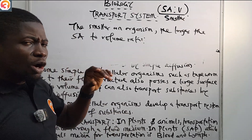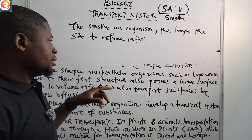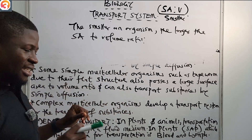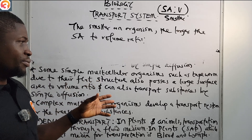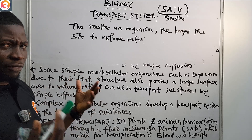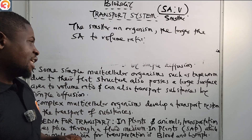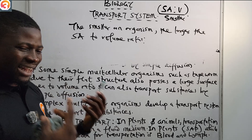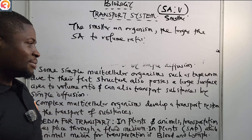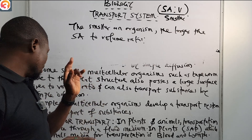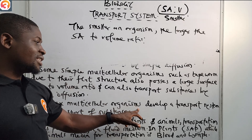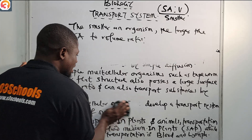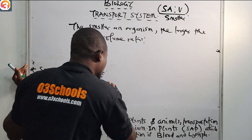Some simple multicellular organisms such as tapeworms, due to their flat structure, also possess a large surface area to volume ratio and can transport substances by simple diffusion. Flatworms and tapeworms can rely on diffusion to deliver materials and move waste products away from the body. However, complex multicellular organisms must develop a dedicated transport system for the transport of substances.